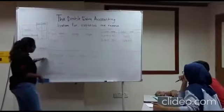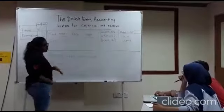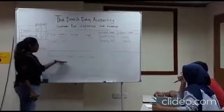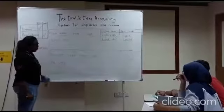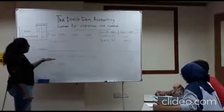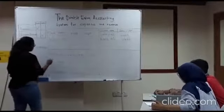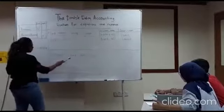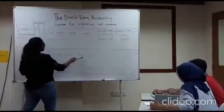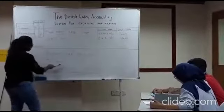For the second question, I'm going to let my fellow students identify the two accounts. Receive rent for RM 10,000 paid by cash. So identify for me the two accounts.